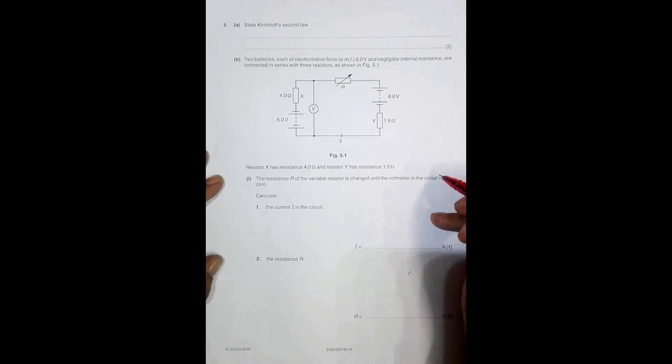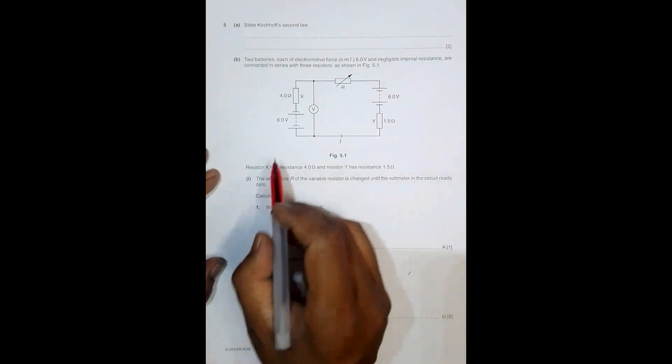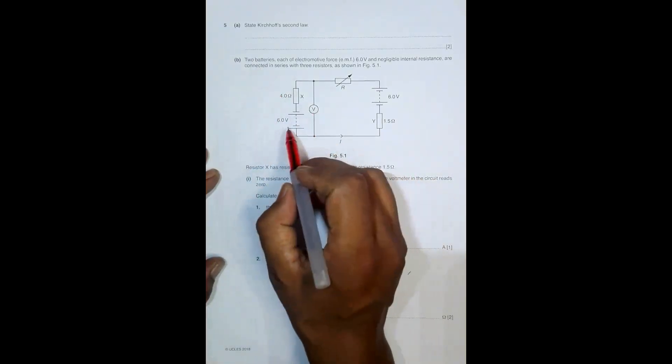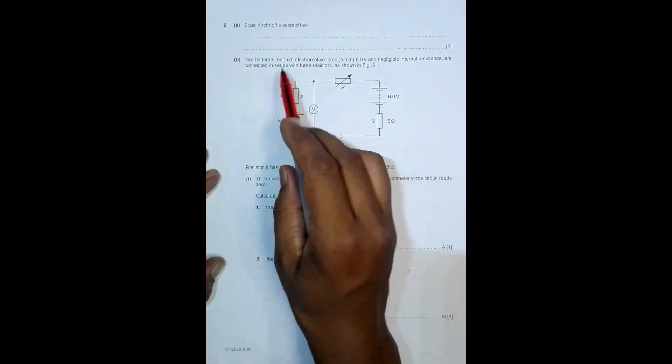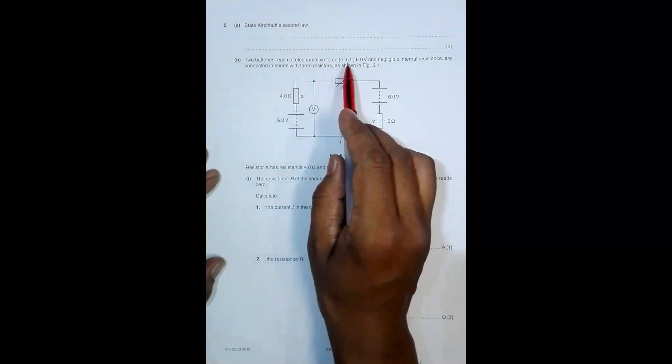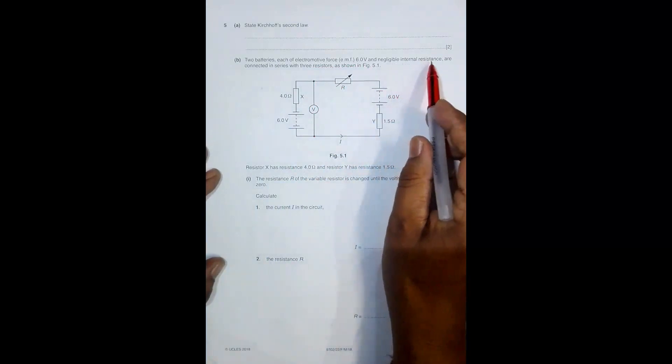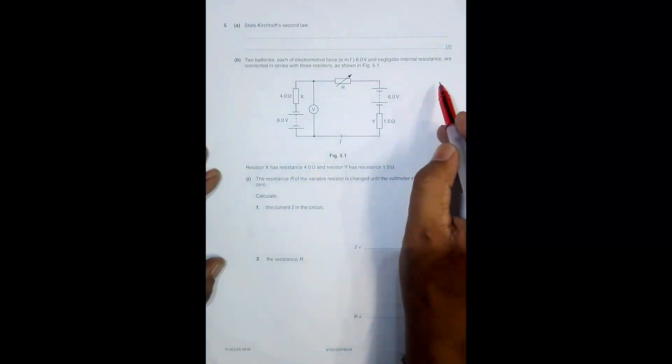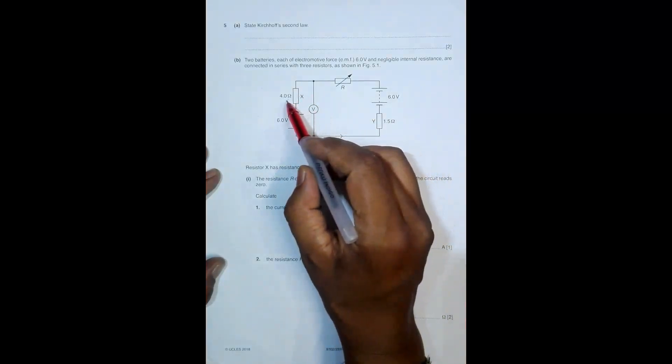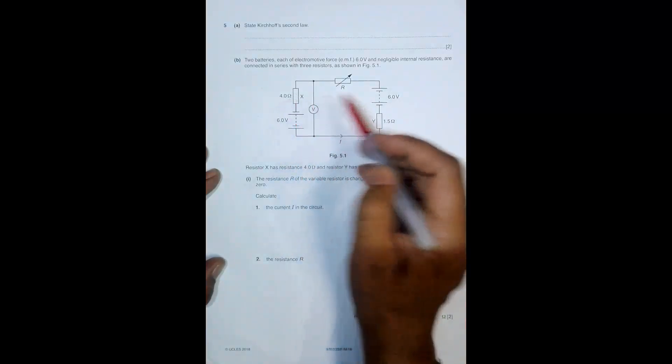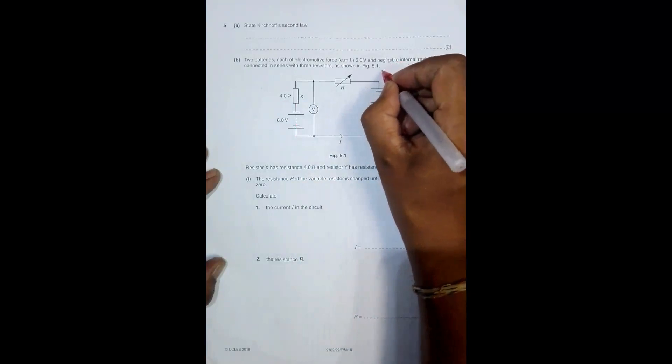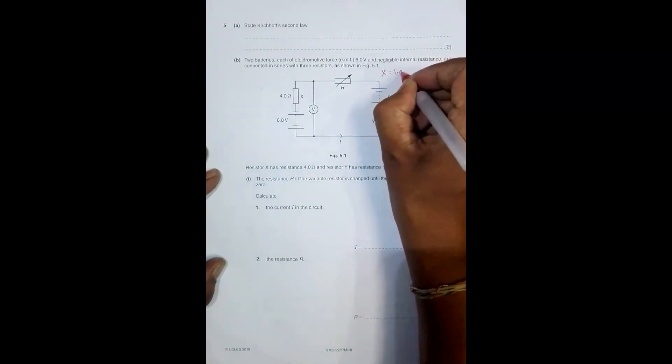Now let me go through the main problem. We have two batteries, each of electromotive force 6.0 volts and negligible internal resistance, connected in series with three resistors. One resistor is 4.0 ohm, so X equals 4.0 ohm.